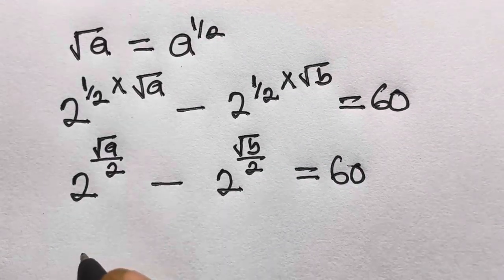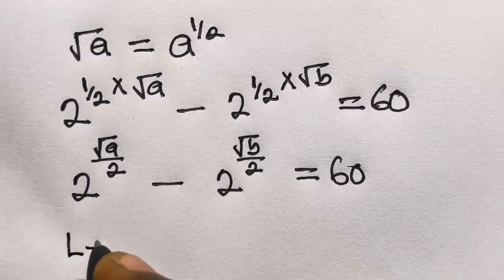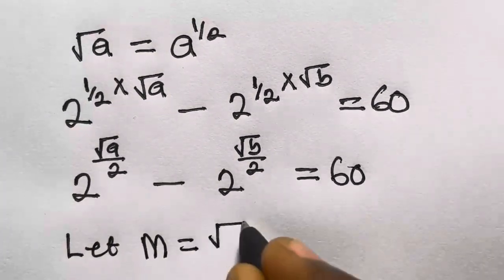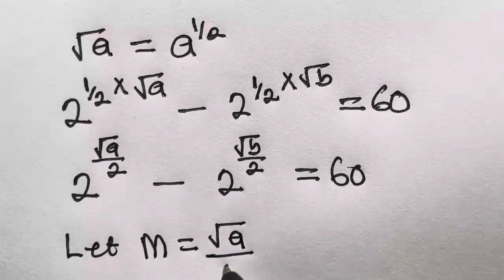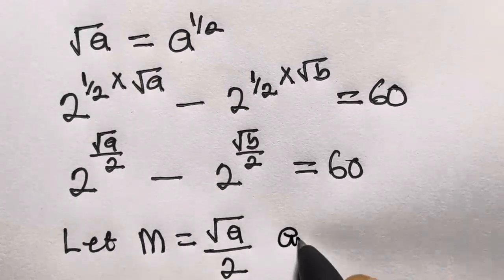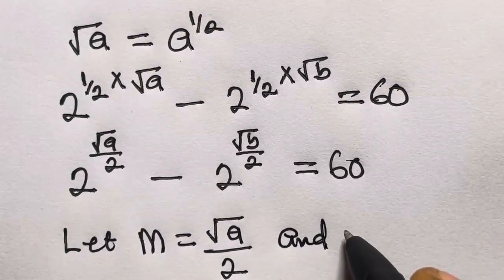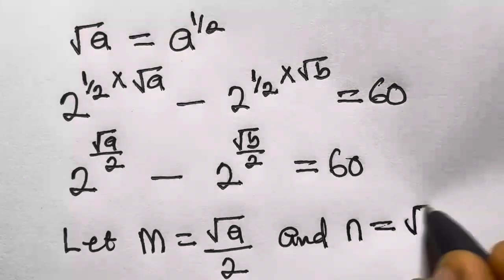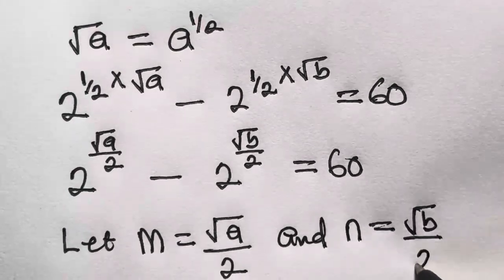From here, we let M equal square root of a divided by 2, and we let N equal square root of b divided by 2. So the above expression becomes 2 raised to the power M, minus 2 raised to the power N, equals 60.